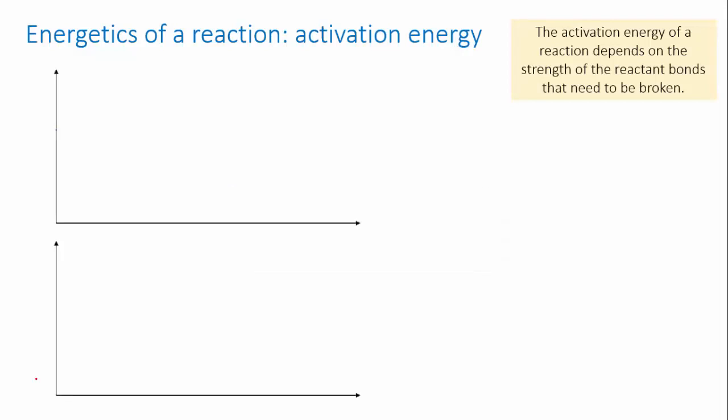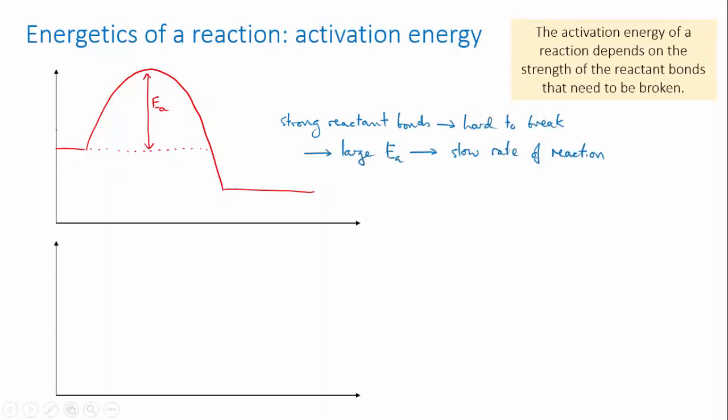A reaction in which strong bonds have to be broken will have a large activation energy. Quite a lot of extra energy will be needed to break those reactant bonds and get things going. Without some kind of helping hand to provide this energy, like an added flame for instance, then the rate of this reaction is going to be slow.